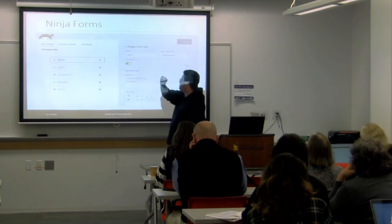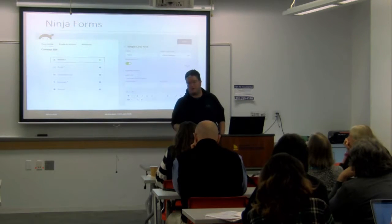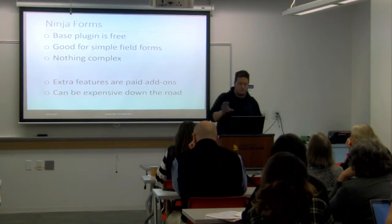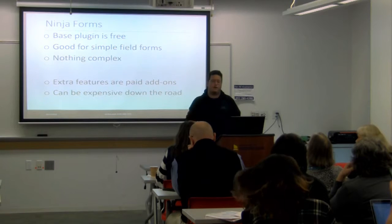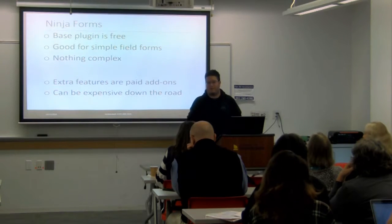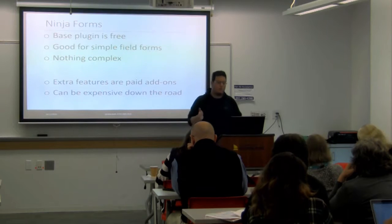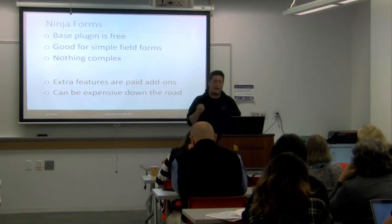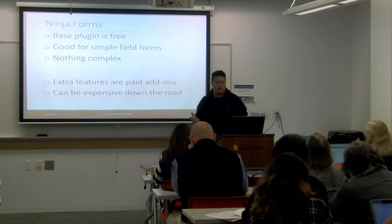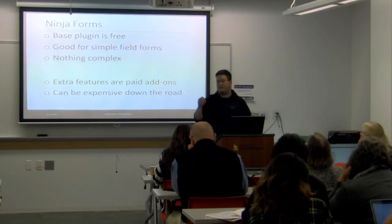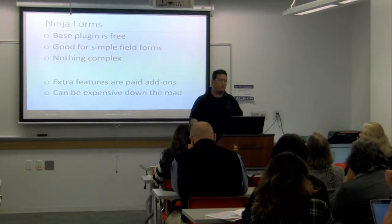Within a field you just click it and you've got a whole slew of options to customize. The base Ninja Forms plugin is free and available in the WordPress.org plugin directory with a lot of good functionality. But when you want more complicated things, that's where they want money — you have to buy add-ons. With all their add-ons, it can get expensive down the road, and if you need many different add-ons, it might be better to go with a different plugin solution.